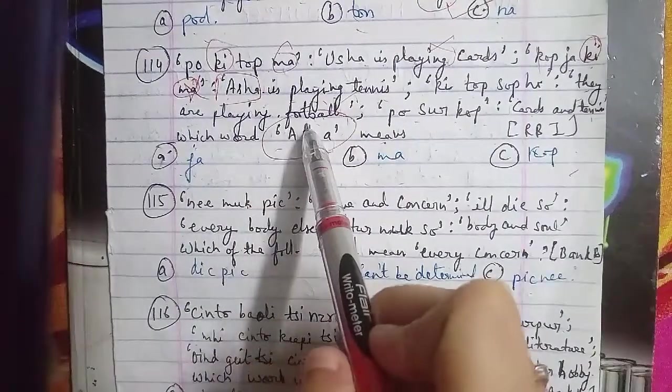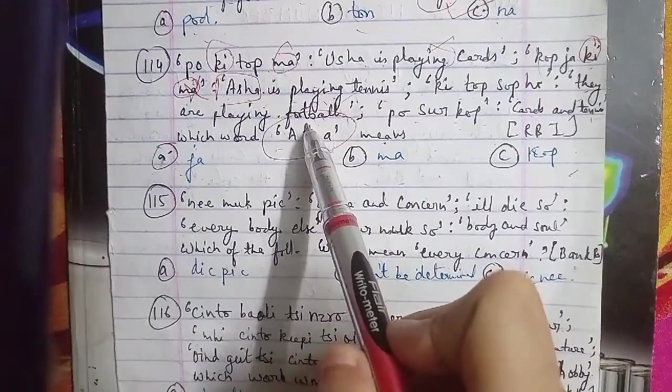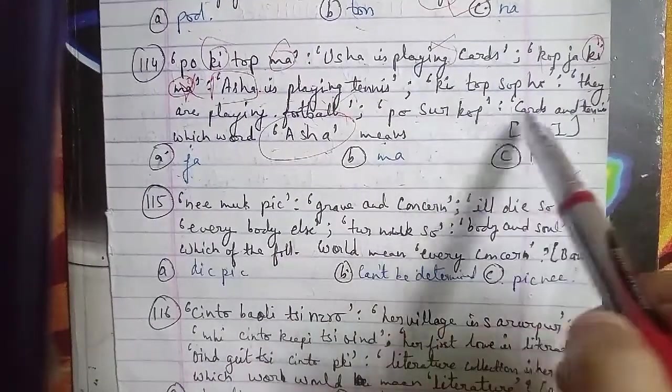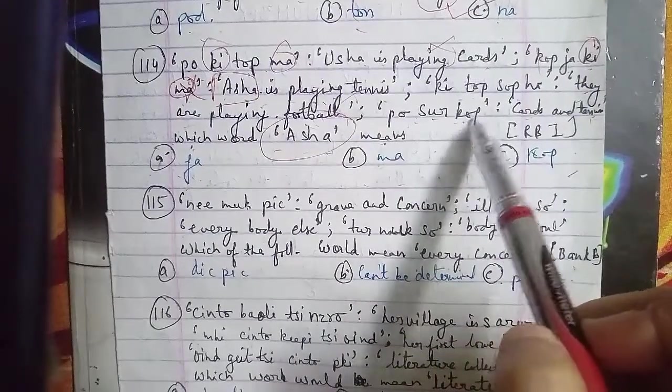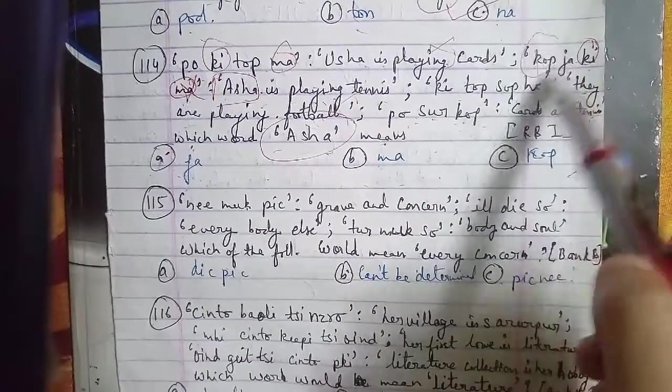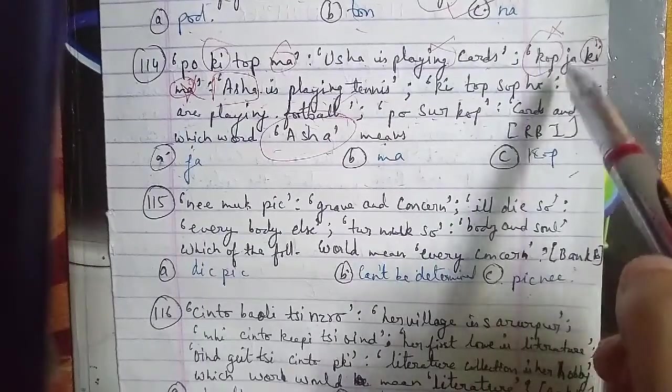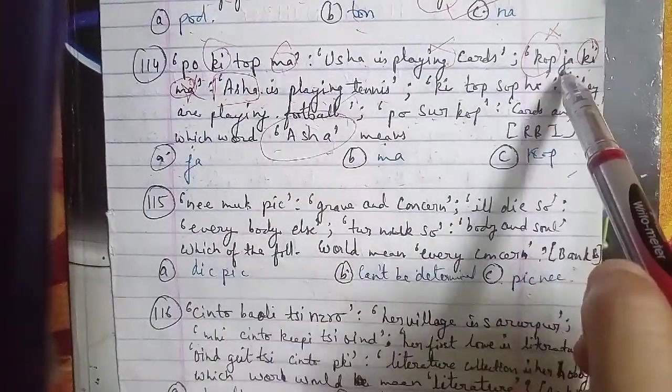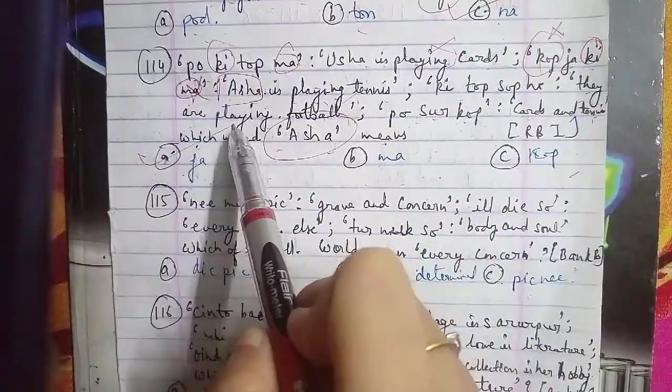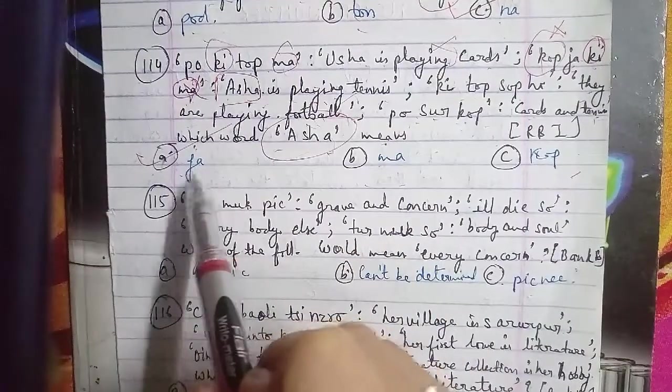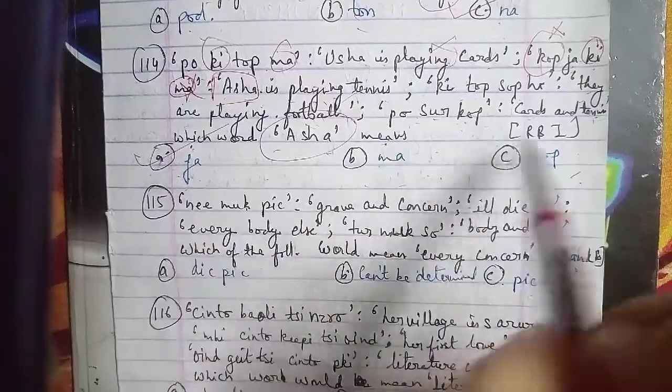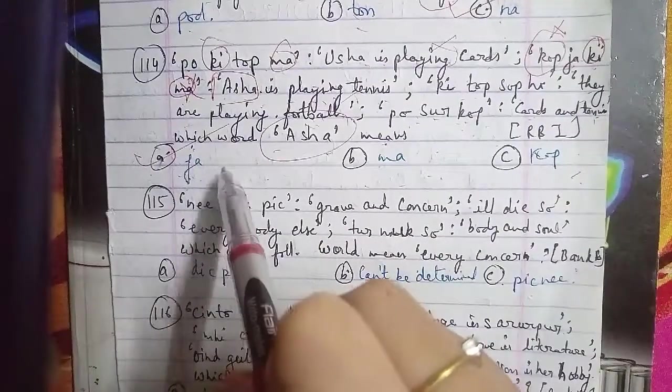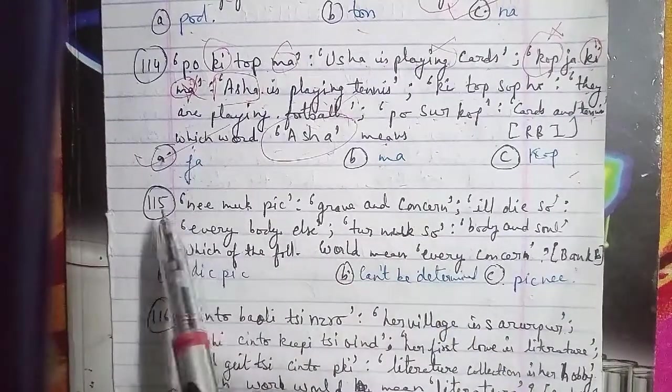Question 115. Ni muk fi is coded as 'grave and concern', il die so is 'everybody else', ter ni so is 'worry and some'. Which of the following words mean 'every concern'? We need to find two words' meaning. This was asked in a bank exam. Options are A: dik pik, B: can't be determined, C: pi nik.